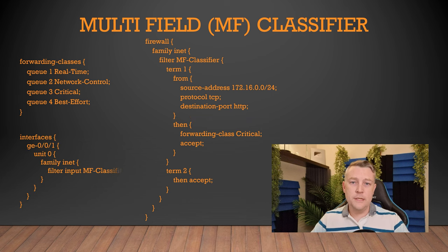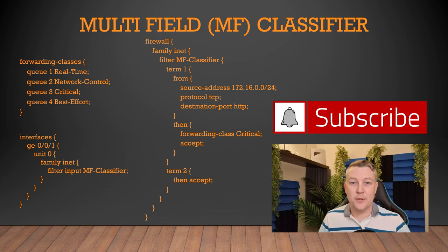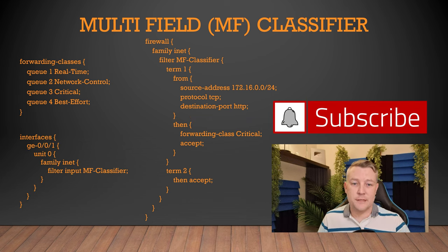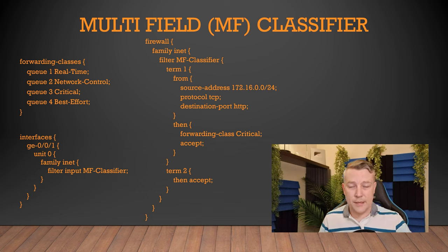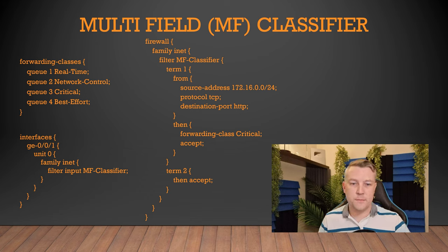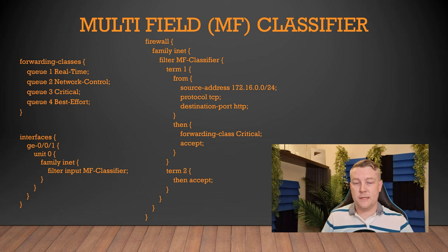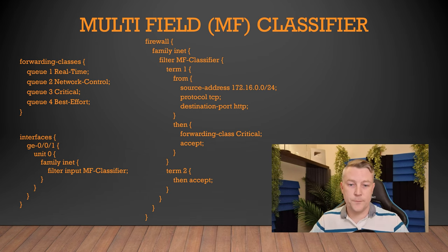The firewall filter just needs to be applied to an interface in the input direction. Classification happens as packets are received. Note this is not under the class of service hierarchy — it's directly on the interface configuration. If we want to, we could use both types of classifiers, the BA and the MF, on the same device.